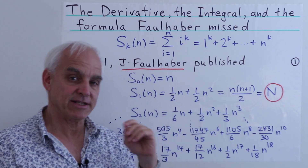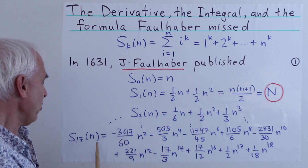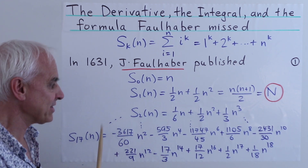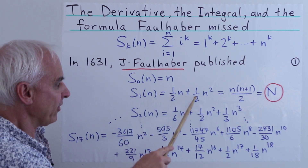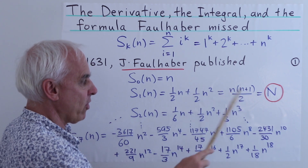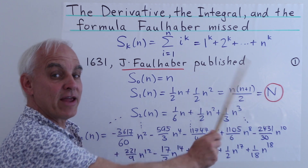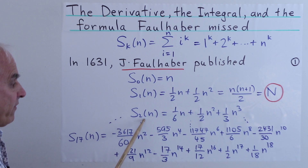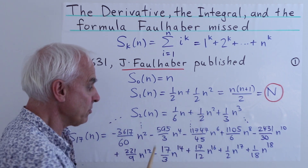Faulhaber exhibited in 1631 these polynomials from S_0 all the way up to S_17. The first ones are classical: S_0(n) is n, S_1(n) is one-half n plus one-half n-squared, more usually written as n(n+1)/2. We're going to introduce capital N to represent this particular polynomial. S_2(n) is one-sixth n plus one-half n-squared plus one-third n-cubed.